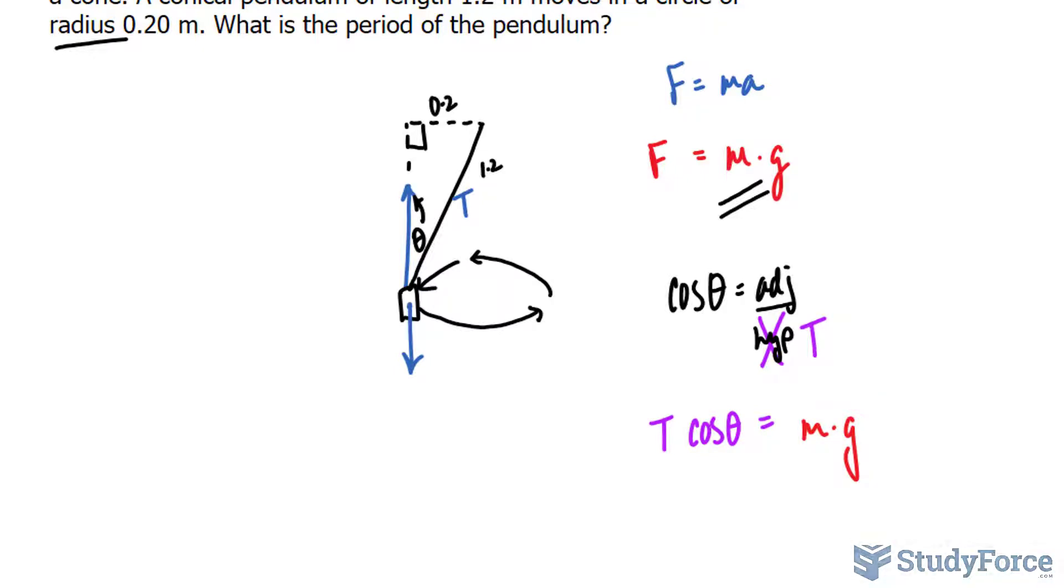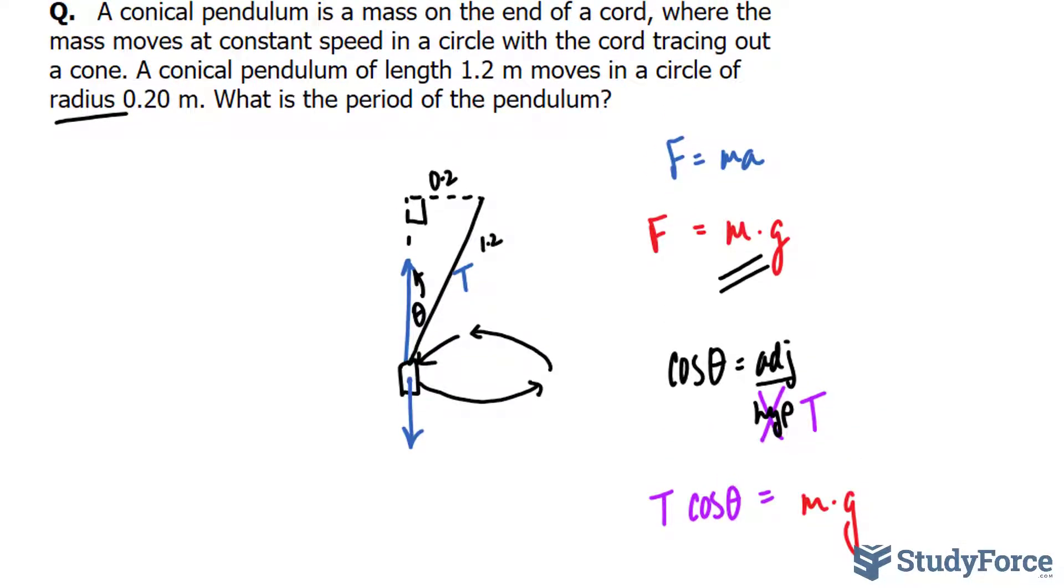The next thing that I want to do is take into account the centripetal force. The centripetal force is represented by this vector going directly to the center of the circle. And this vector, whether it be drawn here or up here, is the same thing.